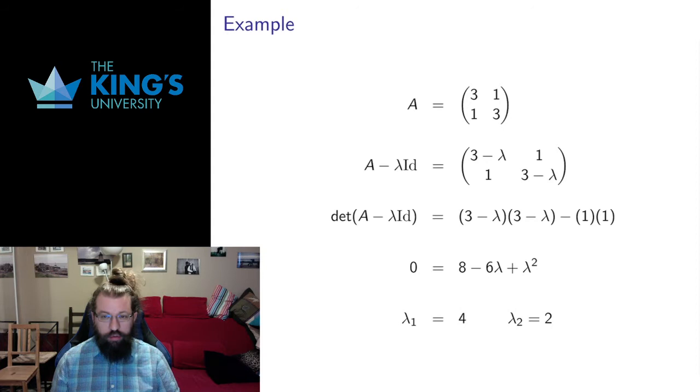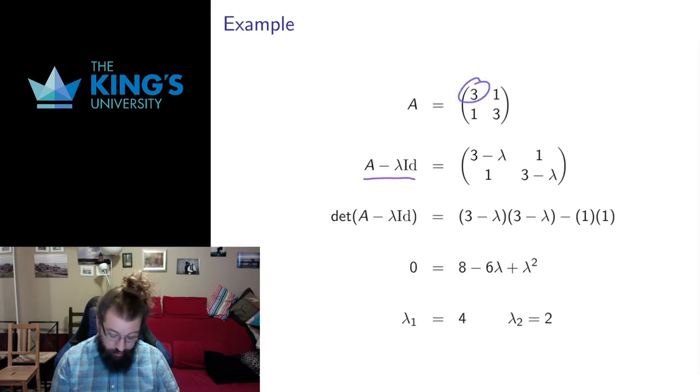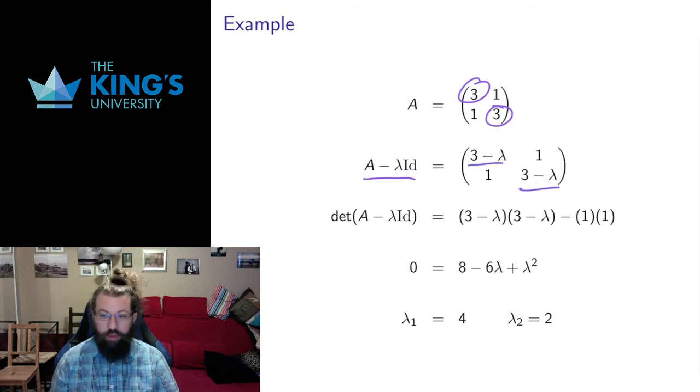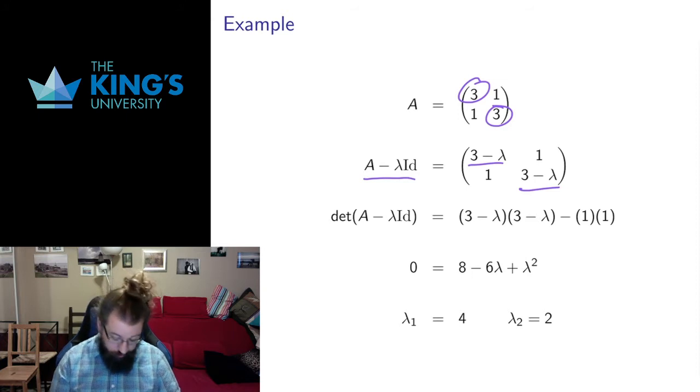So let me take this matrix, 2×2 matrix, 3, 1, 1, 3. This is a symmetric matrix. As I said at the end of the previous video, symmetric matrices are guaranteed to have the maximum number of eigenvalues and eigenvectors. So these are nice examples to do. Let me walk through the algorithm. The first thing I'm going to do is write A minus lambda identity. That consists of taking all of the diagonal entries of the matrix and subtracting lambda from them, treating lambda as an unknown that we're going to try and solve for later.